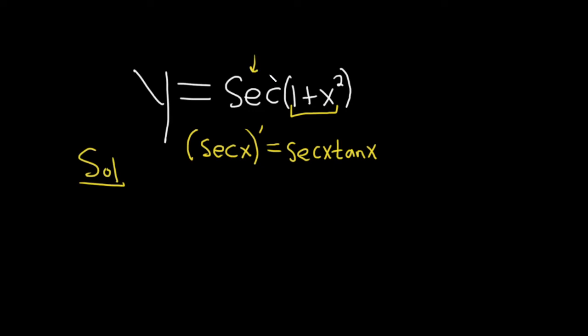The chain rule says that you take the derivative of the outside and leave the inside alone, so you evaluate it at the inside. The derivative of secant is secant tangent, so it'll be secant of 1 plus x squared—you just leave the inside alone—tangent of 1 plus x squared. This is the derivative of the outside part and you leave the inside piece untouched.